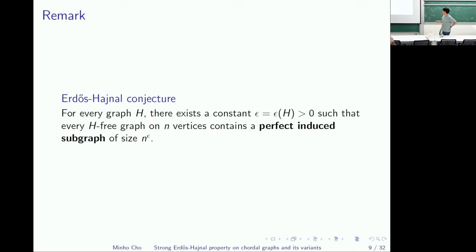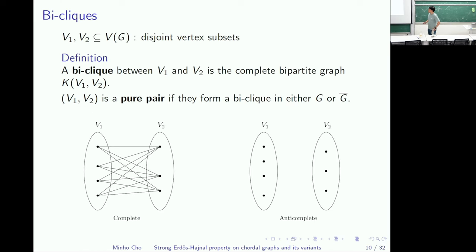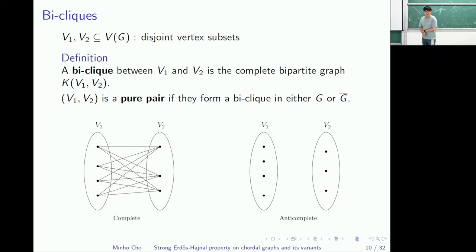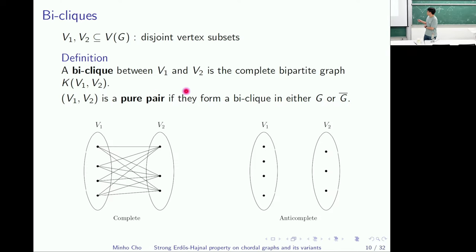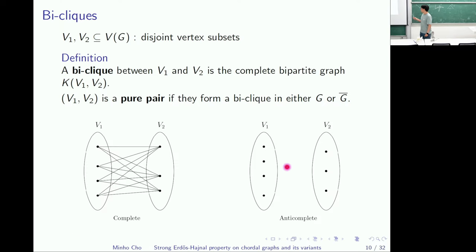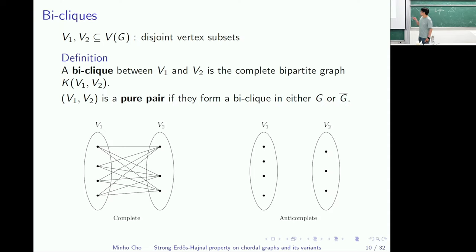Now I will introduce this stronger property. This is a bipartite version of homogeneous set. For a given pair of vertex sets V1 and V2, a graph is a bi-clique between those two sets if there are all possible edges between them, and it is called anti-complete if there are no edges between them. This pair of vertex subsets — which is either complete or anti-complete — is called a pure pair, exactly the bipartite version of homogeneous subset.